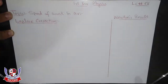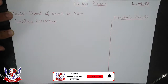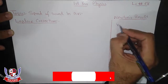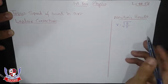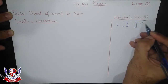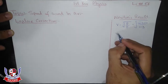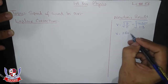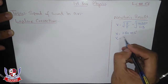Assalamu alaikum students. Today's next lecture is physics. In this previous lecture, we basically used Newton's result and released the formula V = √(P/ρ). The pressure value was 101300 divided by 1.3, which gave approximately 280 meters per second, but the exact value is 332 meters per second.